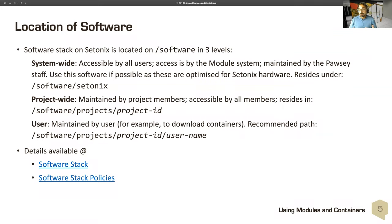This is where we put the optimized software for the Cetonix hardware. Project-wide software that a research group may choose to install would be maintained by project members and accessible at /software/projects/your-project-ID — for example, Palsy1 or S32. The user-maintained one is at /software/projects/project-ID/username. This is where you would put downloaded containers and any small installs you're doing.